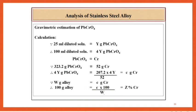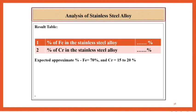W gram alloy corresponds to C gram Cr. Therefore, 100 gram alloy contains (C × 100) / W, that is Z% Cr. Final result table shows percentage of Fe and percentage of Cr in the stainless steel alloy. Expected approximate percentage of Fe is 70% and Cr is 15 to 20%.